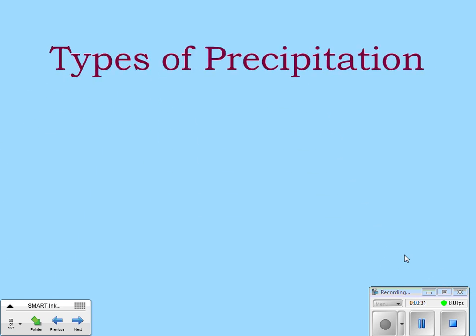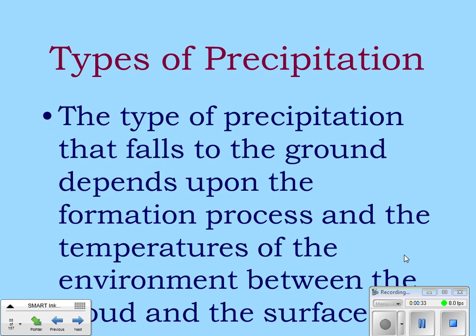The type of precipitation that falls to the ground depends upon the formation process and the temperatures of the environment between the cloud and the surface. If the air temperature above the surface is below 32 degrees in the atmosphere but above 32 at the surface, that might change what precipitation actually hits the ground.